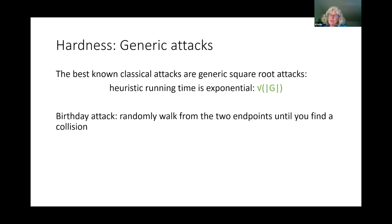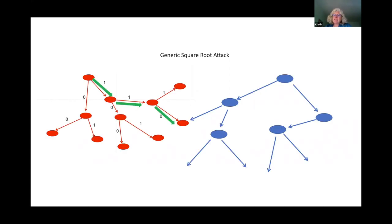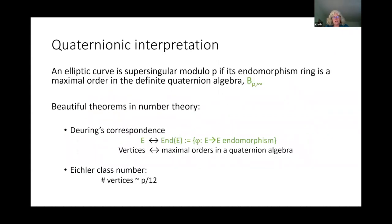Do we have anything better than square-root attacks in our case of the supersingular isogeny graphs? Let me take this opportunity to start on the quaternionic description of these graphs, which was introduced by Pizer. Yana has some exercises in the exercise sheet relating to the quaternion side of things. The quaternionic interpretation of the SIG graphs is as follows. An elliptic curve is supersingular mod P if its endomorphism ring is a maximal order in the definite quaternion algebra B_{P,∞}. The supersingular property is behind a lot of what we've been talking about — for example, the connection with the theory of modular forms and the Ramanujan property all follow from the supersingular assumption.